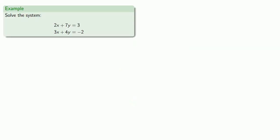Let's solve the system of equations: 2x + 7y = 3, and 3x + 4y = -2.